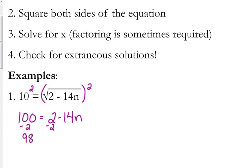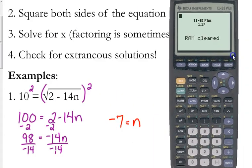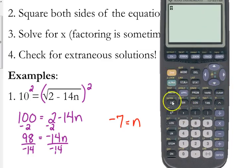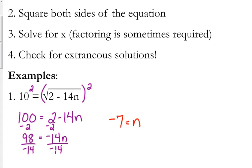Subtract 2 from both sides — 100 minus 2 is 98. Then divide by negative 14, and that gives us negative 7. So negative 7 is your n. You should always check your answer — plug it into the right side to ensure it equals 10, and it does. So negative 7 is not an extraneous solution; negative 7 is the solution to this equation.